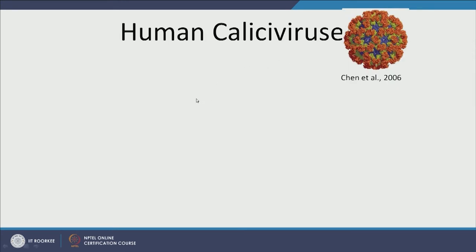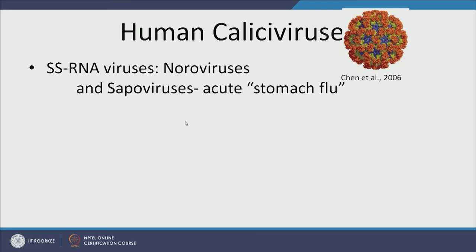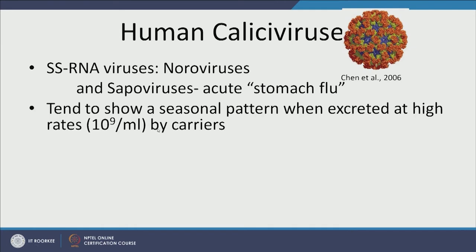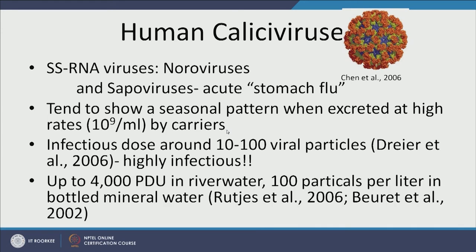Next we have human calicivirus — also a single-stranded RNA virus, known as norovirus, which causes really bad diarrhea commonly called stomach flu. It tends to show a seasonal pattern when excreted at high rates by carriers. The infectious dose is about 10 to 100 viral particles — the same as hepatitis A and E — making it highly infectious. Even in developed countries, people suffer from stomach flu. It is not pleasant.